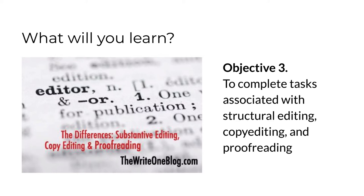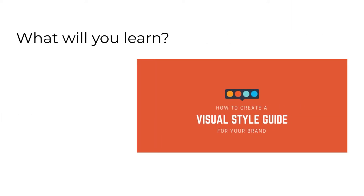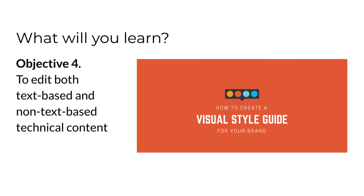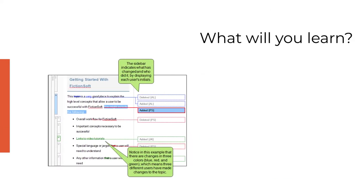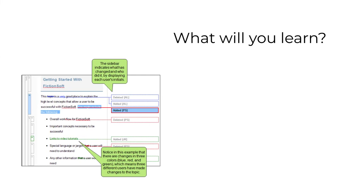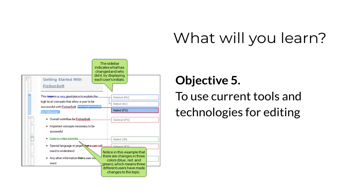There'll be more about this in Module 1. Understanding levels of edit is one of the most important things that you gain in the course. The fourth objective is for you to learn to edit both text-heavy and text-light content. Techcom audiences need good content, whether it's made up of text or diagrams or audio or video. The fifth objective is for you to practice using current tools and technologies. In particular, we'll focus on the use of features in Microsoft Word, but there are far more advanced tools used in industry and you'll learn a little bit about them as well.